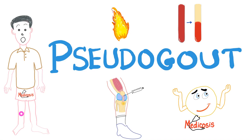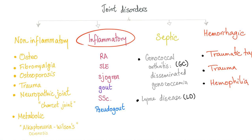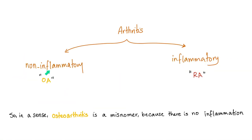Remember that gout was the big toe. Pseudogout, however, is the knee, the wrist, the shoulder, the ankle, and the MCPs. Joint disorders are non-inflammatory, inflammatory, septic, or hemorrhagic. Pseudogout and gout are inflammatory. Is pseudogout non-inflammatory like osteo or inflammatory like rheumatoid? It's inflammatory like rheumatoid, and that's why both of them can affect the MCP joints.